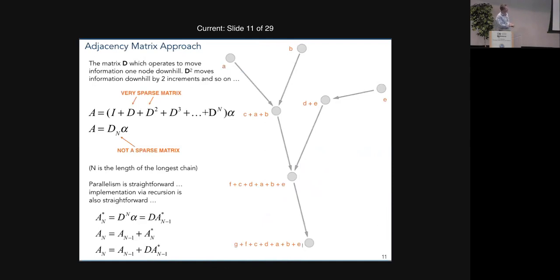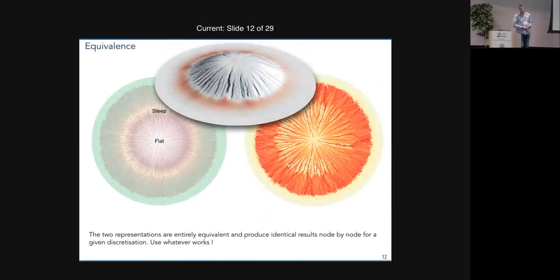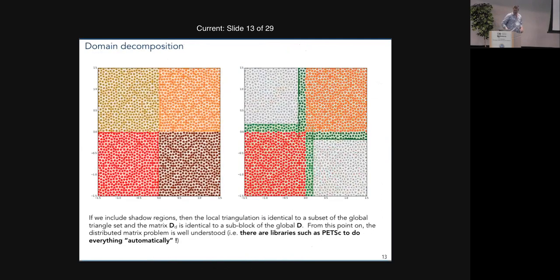The actual implementation you would probably not do by building that matrix and doing lots of matrix multiplications, because there's a recursion that exists. If you keep multiplying and summing this problem over and over again, you will achieve the result. If you do it n times, you will achieve the result of building the matrix and using it once. The two representations are formally the same.